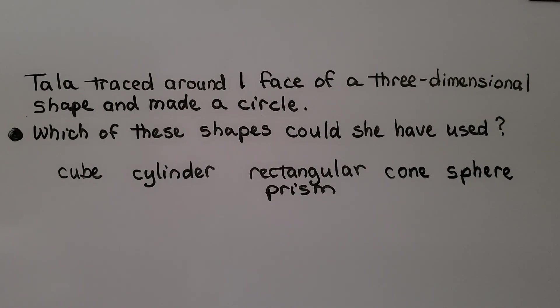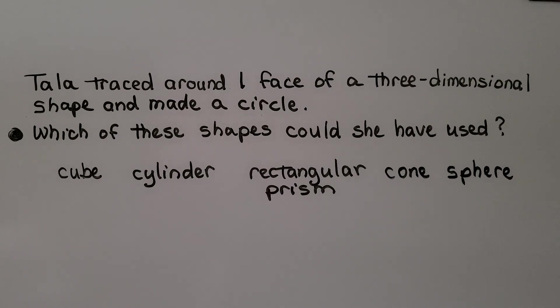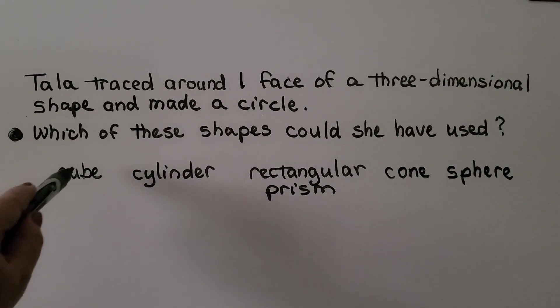Tala traced around one face of a three-dimensional shape and made a circle. Which of these shapes could she have used? So we need to circle any of them that would have had a circle if she had traced around one face. Is there a circle on the face of a cube? No. So it's not cube.